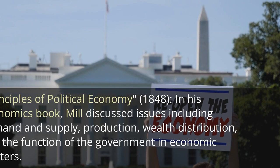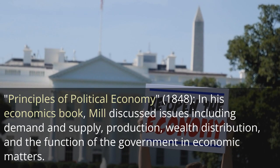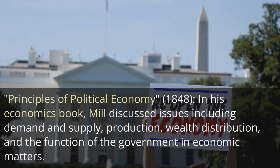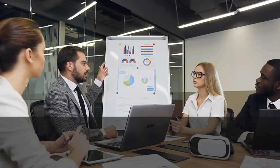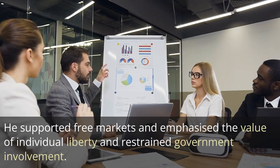Second, Principles of Political Economy, 1848: in his economics book, Mill discussed issues including demand and supply, production, wealth distribution, and the function of the government in economic matters. He supported free markets and emphasized the value of individual liberty and restrained government involvement.